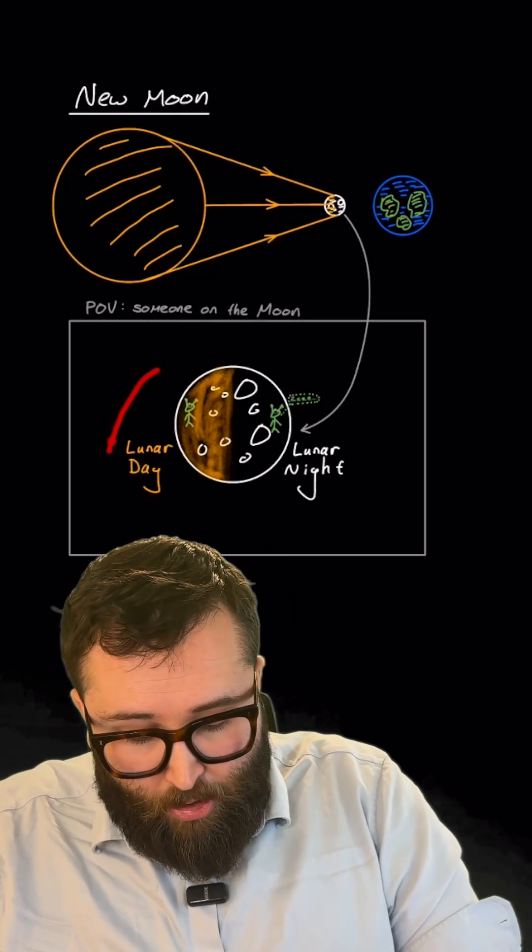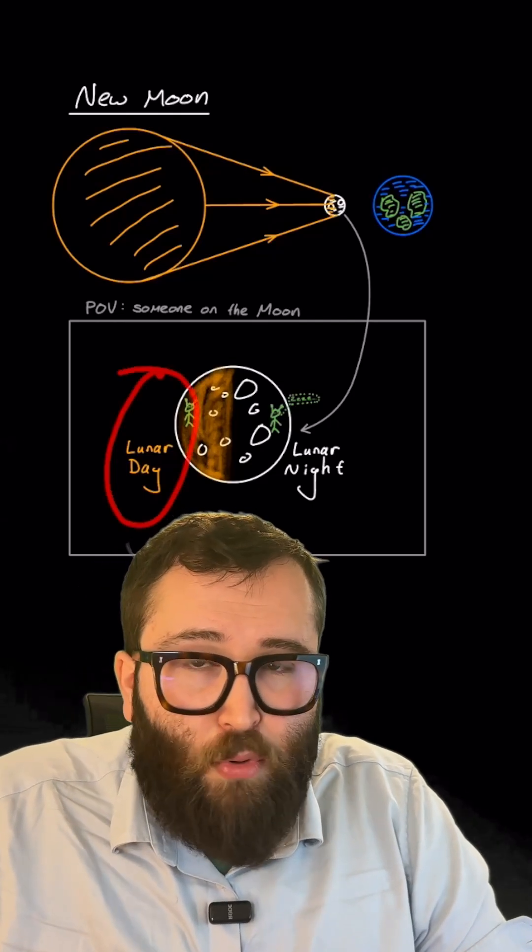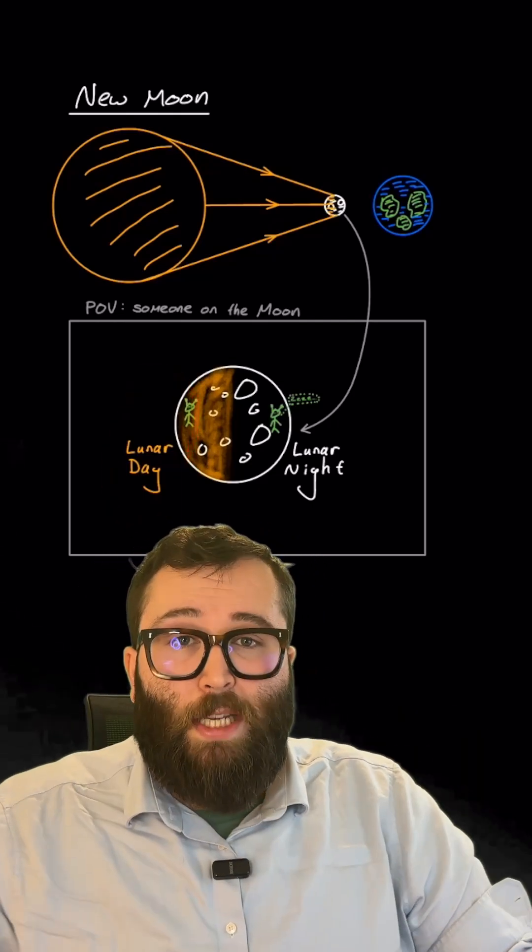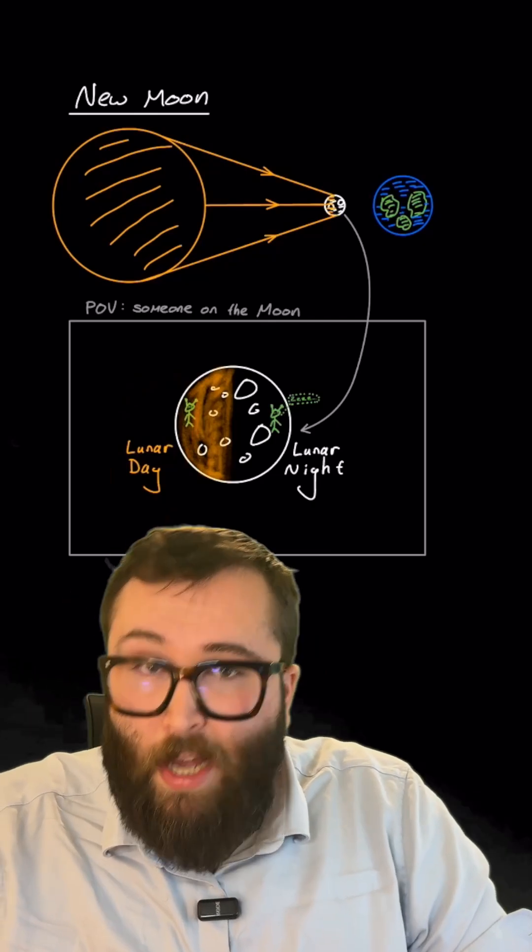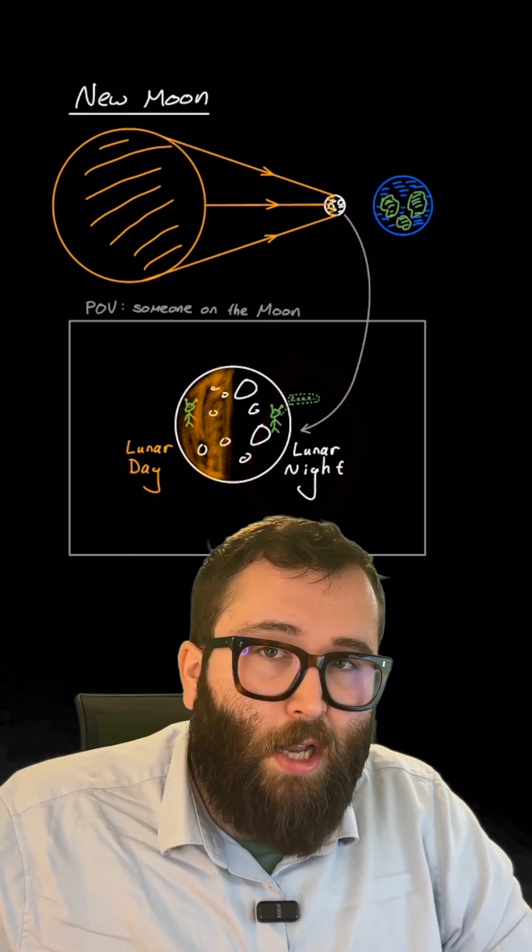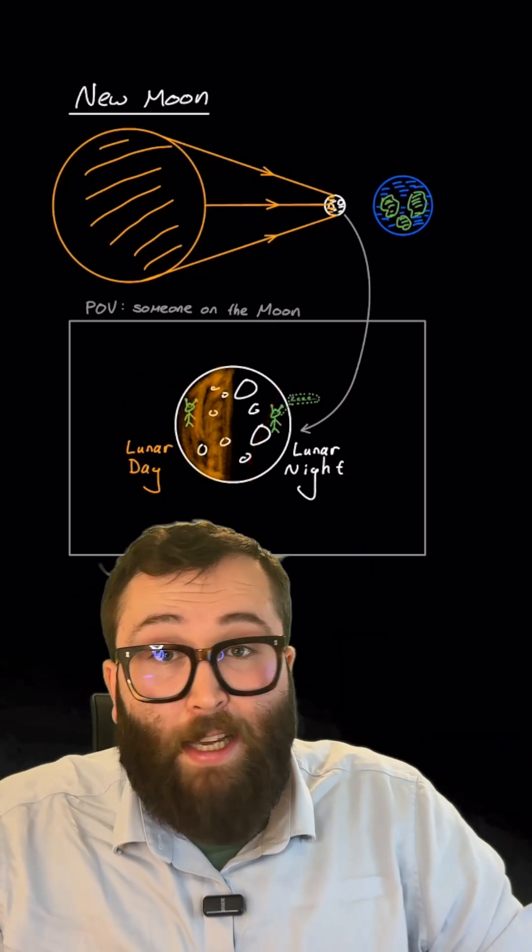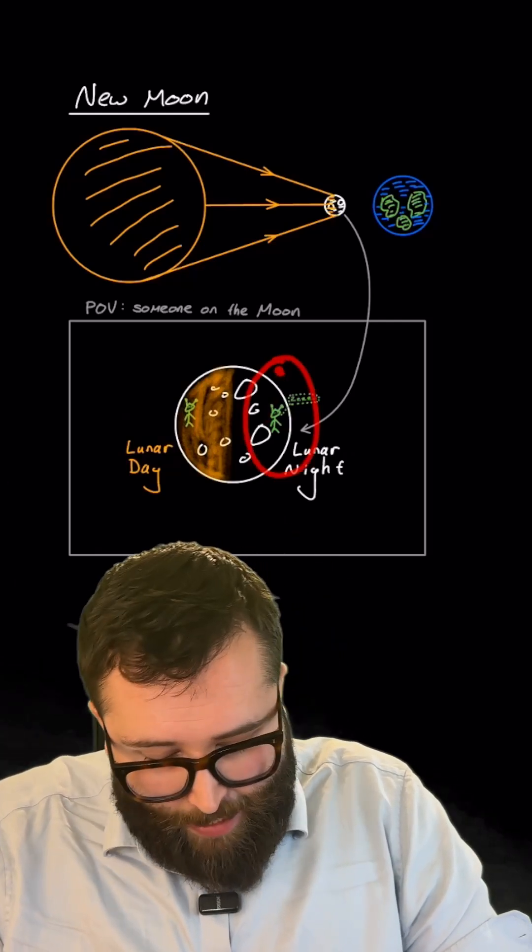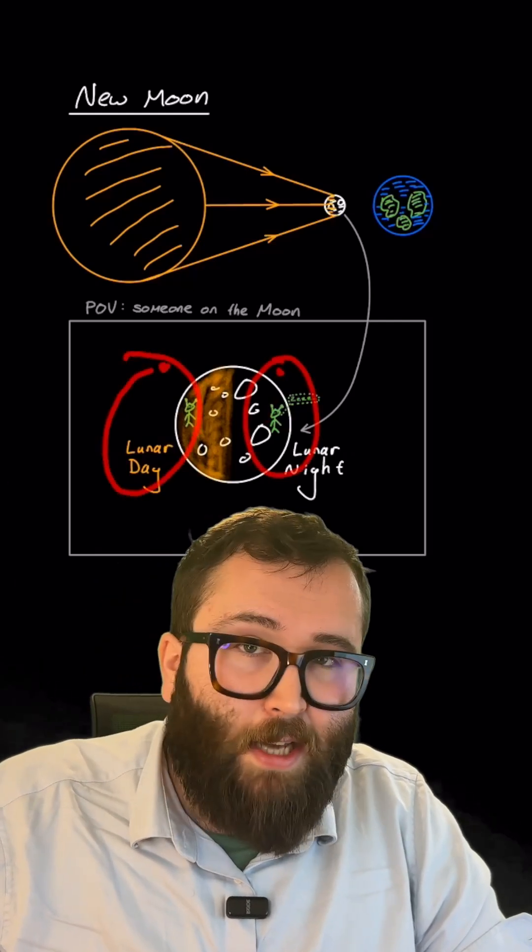When it's a new moon, the people that are on the left side of the moon as I've drawn it are experiencing lunar day, and the people on the right side of the moon are experiencing lunar night. But half of a lunar day later it'll be reversed, and the people over here will be in daylight and the moon people over here will be in nighttime.